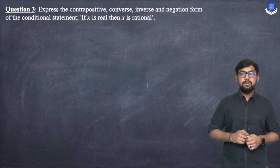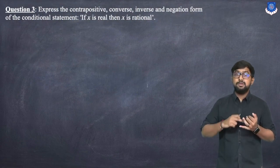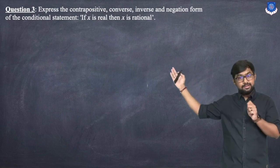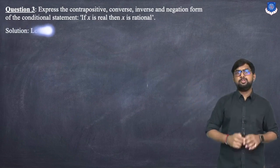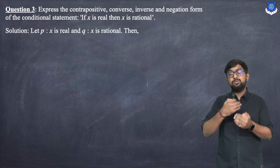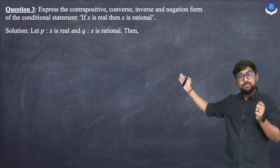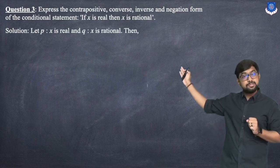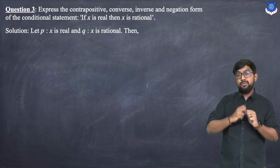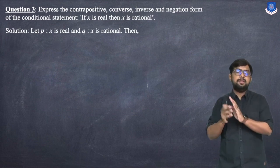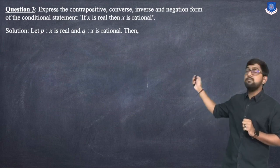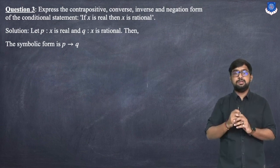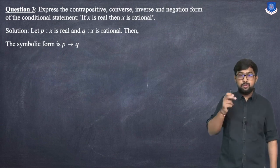Third example: express the contrapositive, converse, inverse, and negation of the conditional statement 'If X is real then X is rational.' Let P = 'X is real' and Q = 'X is rational.' The symbolic form is P → Q.